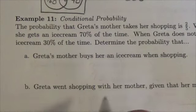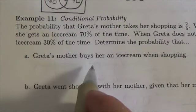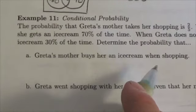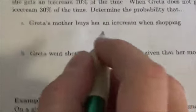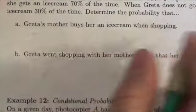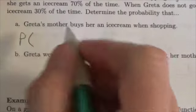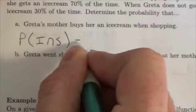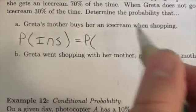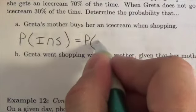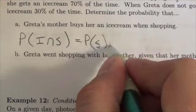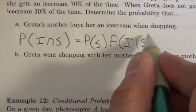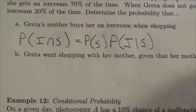Determine the probability that — here's the first one — Greta's mother buys her an ice cream when shopping. So what we're looking at here is really just a straightforward example. This is the probability that she gets an ice cream and she's shopping. So this is going to be the probability that she goes shopping, multiplied by the probability that she gets an ice cream given that she's shopping, because that's the information we're given here.